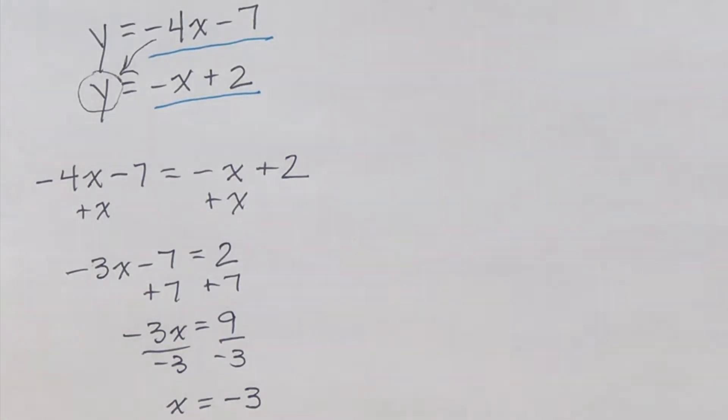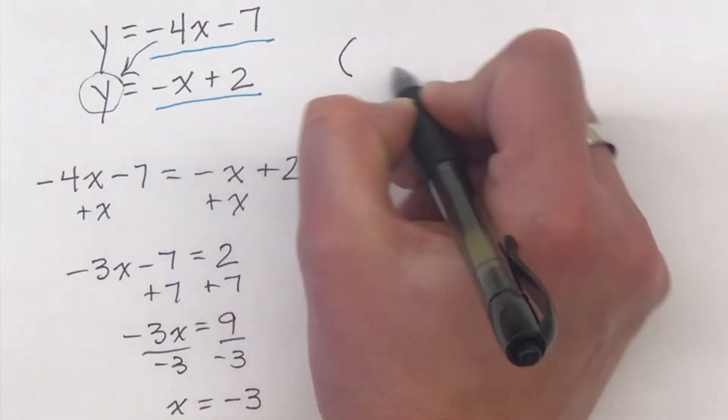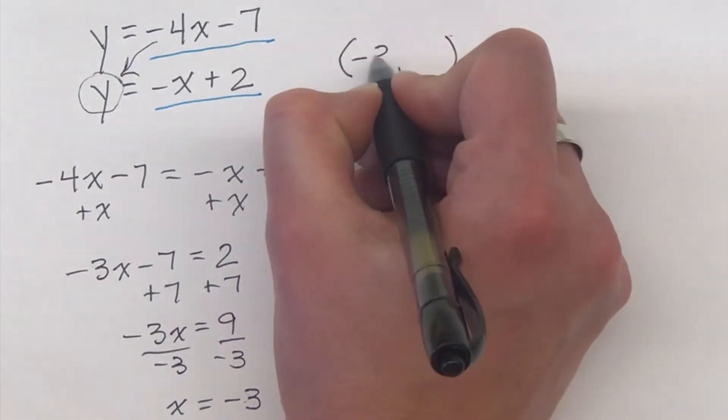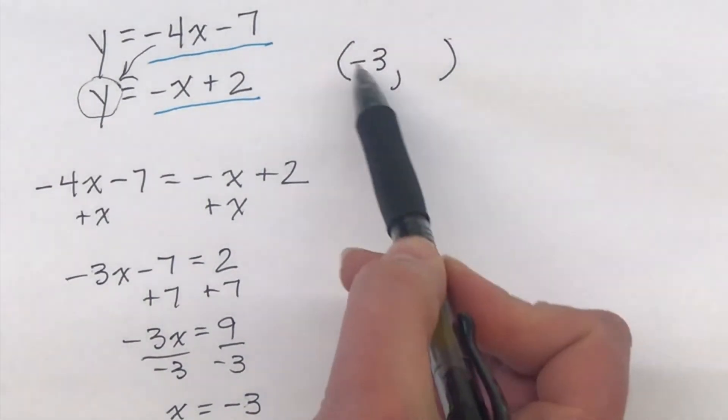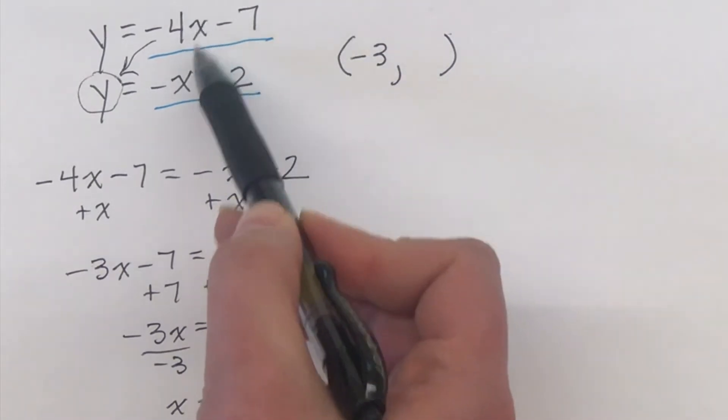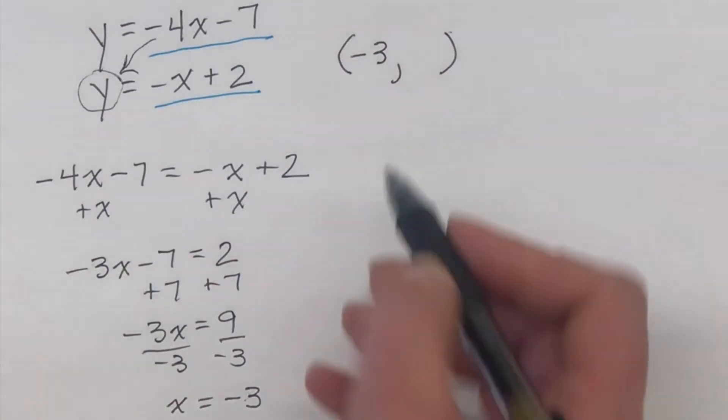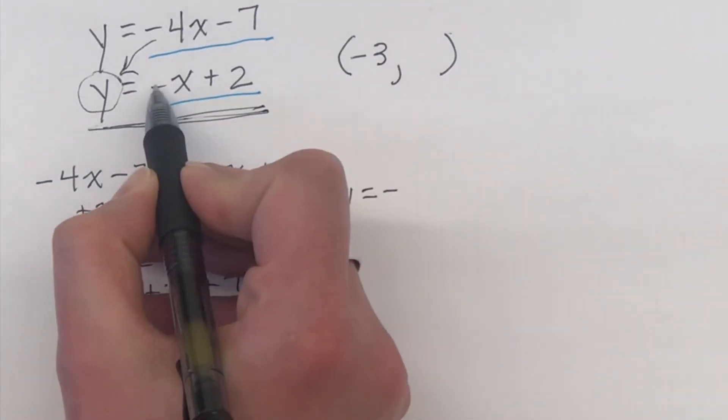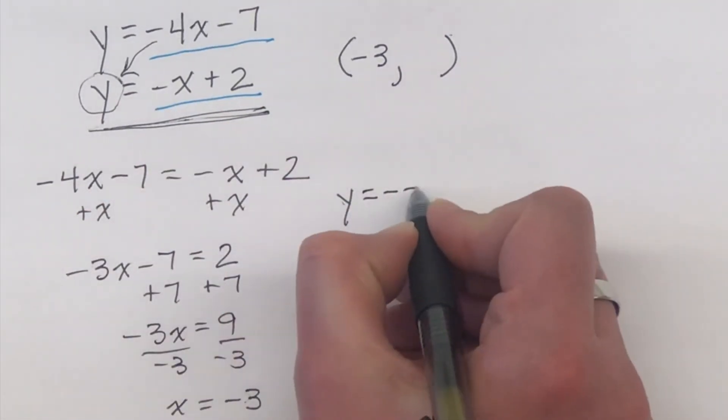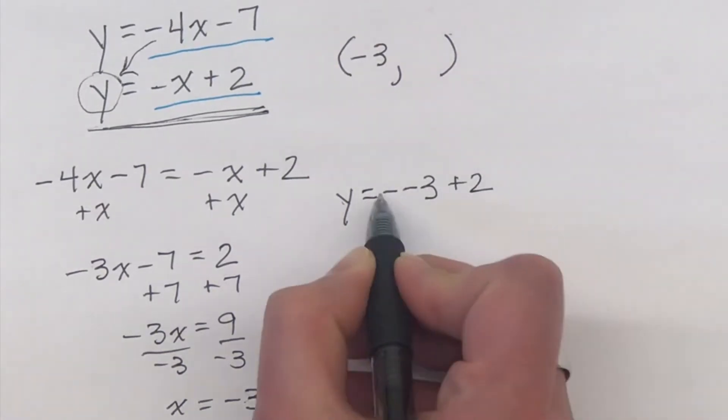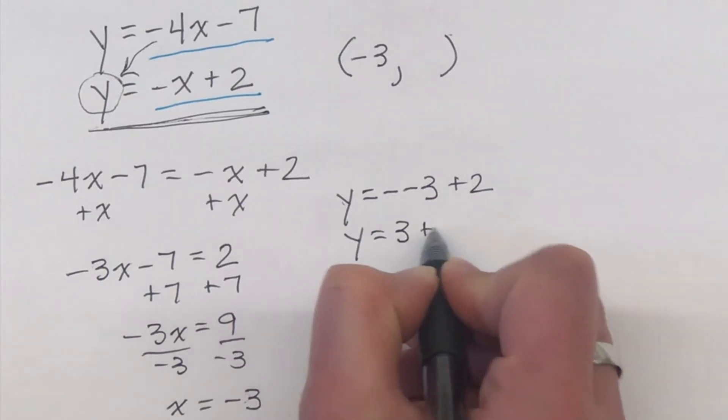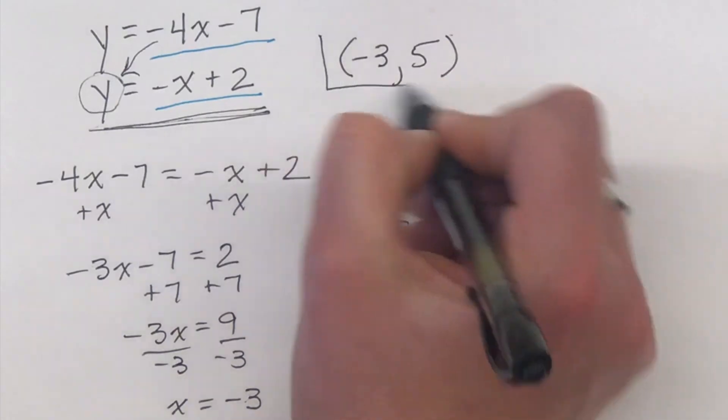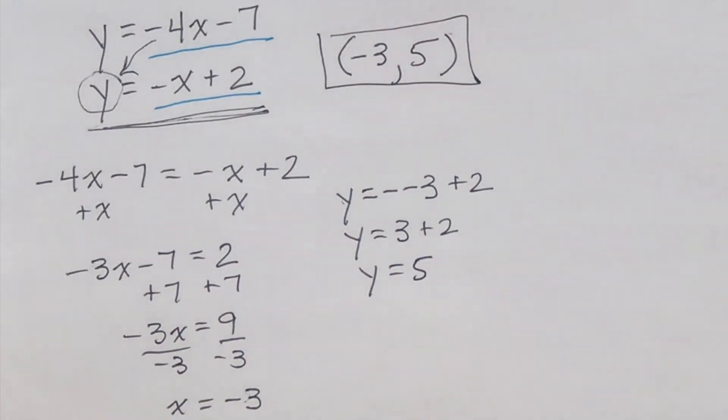Just like when you're solving systems of equations by graphing, the answer is going to be an ordered pair. So now we know the x-coordinate of the ordered pair, which is negative 3. We just need to plug this negative 3 into one of these equations to solve for y. So I'm going to plug it into this bottom equation right here. I'm going to say y is equal to negative, because there's a negative there. My x is negative 3, and then plus 2. Two negatives make a positive, and 3 plus 2 is equal to 5. So the ordered pair that works for both of the equations is negative 3 comma 5.